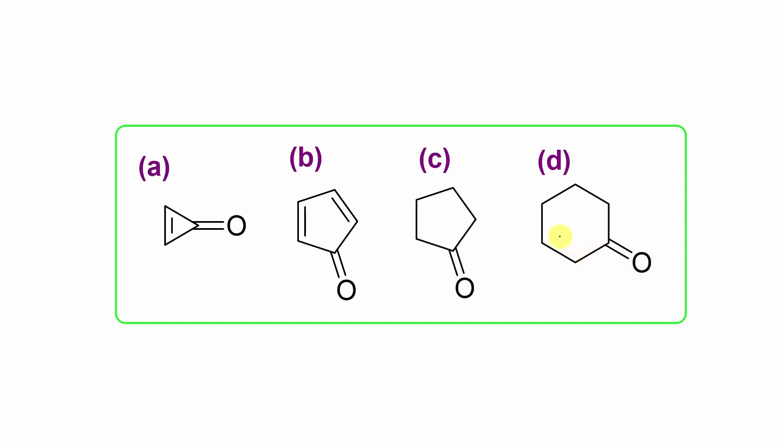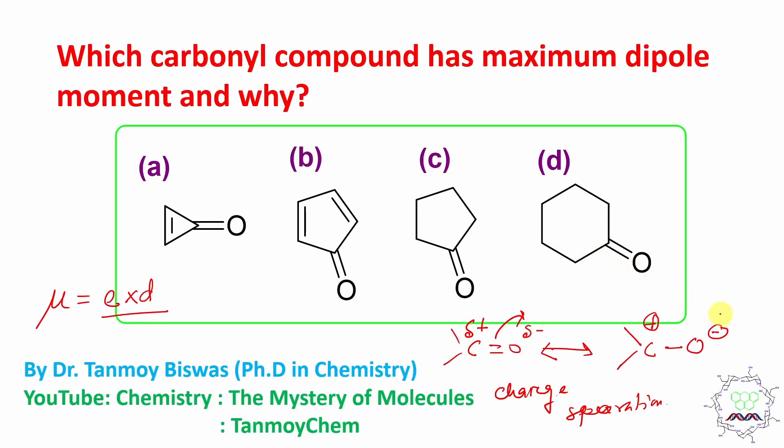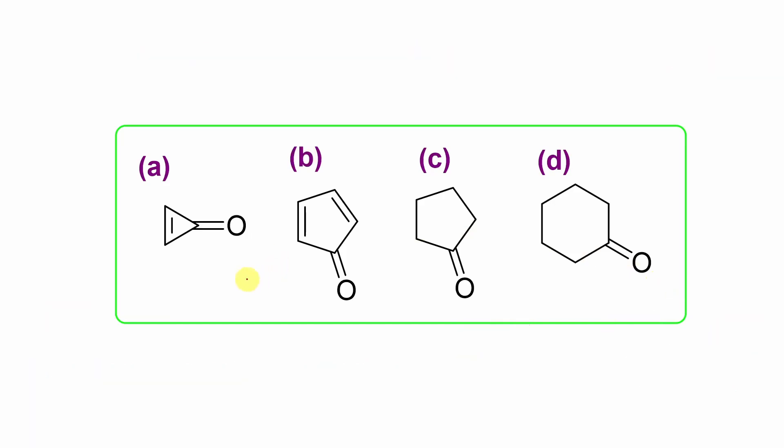But, there is some other issue. Actually, in this case, student, you need to focus on this part, the stability of this canonical form. Now, if I draw the resonance of all the canonical form, you can see, this is O minus, this is plus, double bond here.